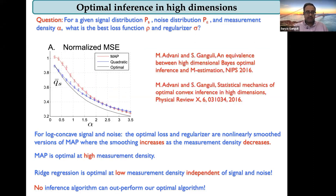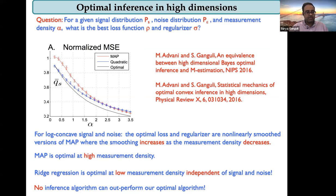What's really nice is the universality: ridge is a universal optimal algorithm at low measurement densities, regardless of your signal and noise distribution, assuming the product distribution and log-concave signal and noise. Importantly, this doesn't solve interesting special cases like sparse regression with sparse priors, because the spike-slab prior on the unknown S0 doesn't have a log-concave signal distribution. The details can be found in the two papers referenced. This is in some sense a way to compute high-dimensional integrals by solving a high-dimensional optimization problem.